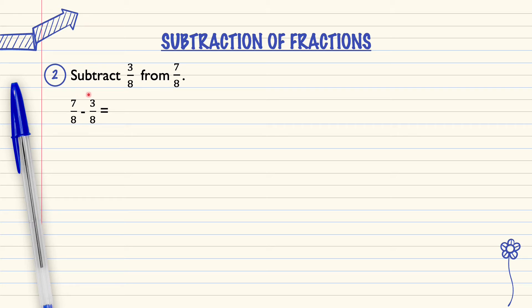7 minus 3 equals 4 over 8. 4 over 8 is the answer. But 4 over 8 we can write in simplest form.